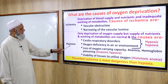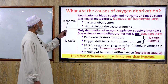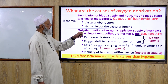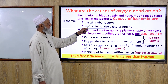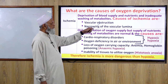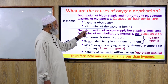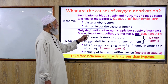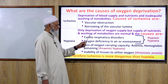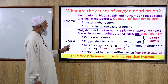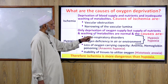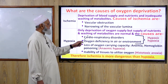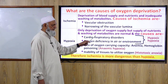What is ischemia? Ischemia is deprivation of the blood supply and nutrients and inadequate removal of metabolites. Its causes include vascular obstruction and narrowing of the vascular lumen. What is hypoxia? Hypoxia is only deprivation of oxygen supply, but supply of nutrients and washing of metabolites are normal.